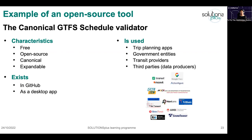I'll give you an example of an open source tool used for data quality in public transit: the Canonical GTFS Schedule Validator. Its characteristics: it's free to use and reproduce, open source with code available for all to improve and contribute to. It is canonical — totally in line with the GTFS Schedule specification and extensions I showed earlier. It is expandable: every time there is a new extension, the validator updates to maintain parity. It exists on GitHub and also as a desktop app you can include in your data pipeline.